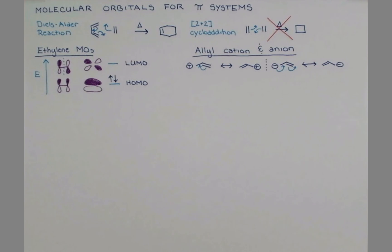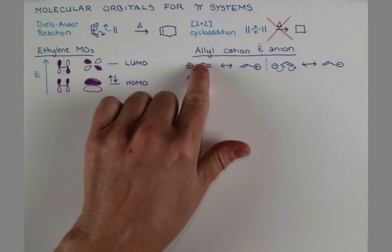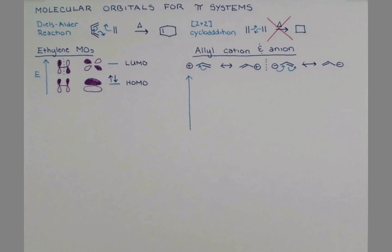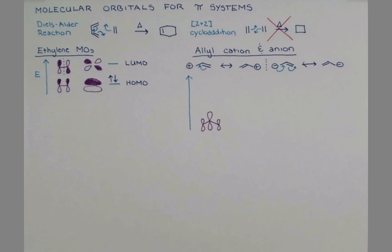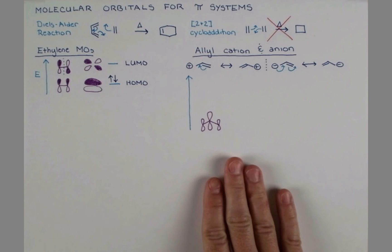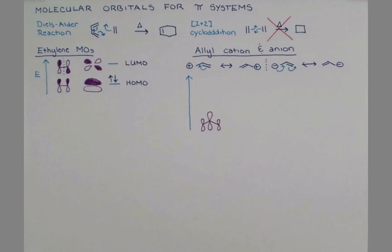Let's draw our energy diagram and sketch out our molecular orbitals. We now have three carbon atoms in our pi system, so we expect three molecular orbitals. I'll draw a p-orbital on each of these carbon atoms. Notice that the p-orbital on the middle carbon atom is drawn a bit larger than the ones on the end — this is actually how it exists, a consequence of the mathematics that describes the wave function.